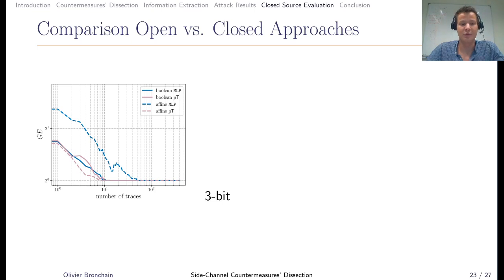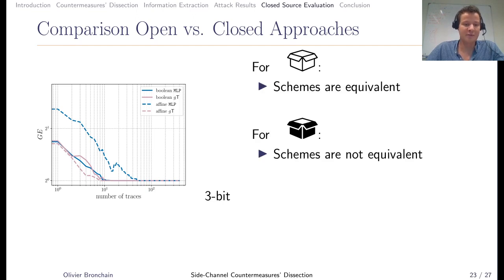The question is, how do open and closed approaches compare in these settings? On this graph, x-axis is the number of measurements and y-axis is the guessing entropy. The blue curves are for closed approach and purple for open approach, dashed lines for affine masking and continuous for boolean masking. First, you observe that for open approach, both are equivalent.